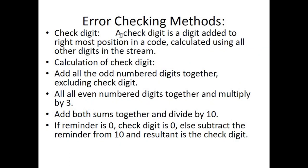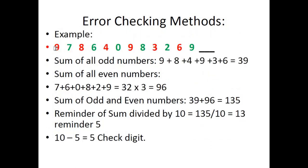The last method is check digit. A check digit is a digit added to the rightmost position in the code, calculated using all other digits in the stream. This is mostly used in ISBN numbers of books. The steps are: add all the odd-positioned digits together (excluding the check digit); add all the even-positioned digits together and multiply by 3; add both sums together and divide by 10. If the remainder is 0, the check digit is 0; otherwise subtract the remainder from 10 and the result is the check digit.